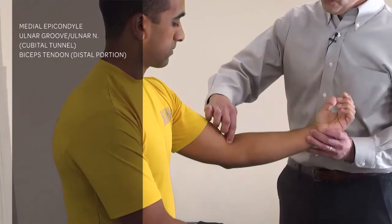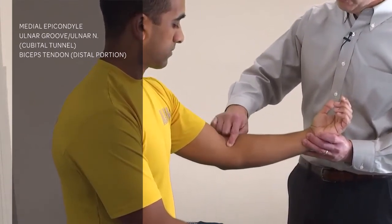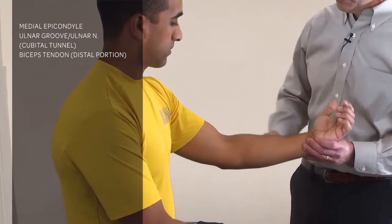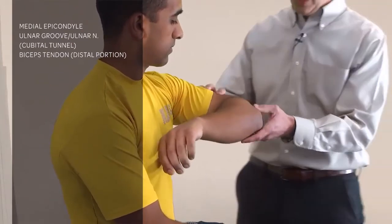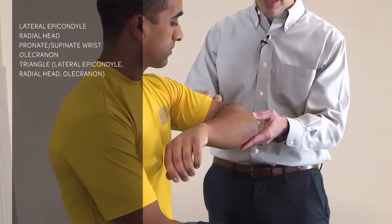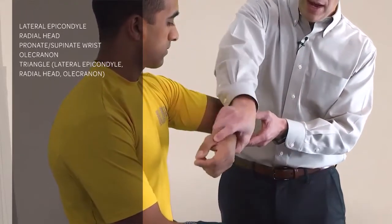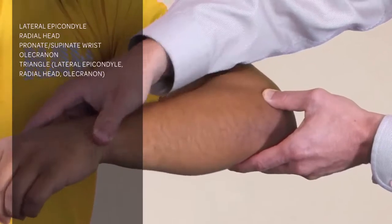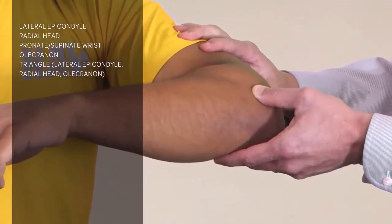You're feeling for the distal portion of the biceps tendon, looking for any tenderness as it inserts into the radial styloid. On the lateral aspect we're feeling for the lateral epicondyle, the radial head, and you can pronate and supinate the wrist and you'll feel the radial head move underneath your finger.